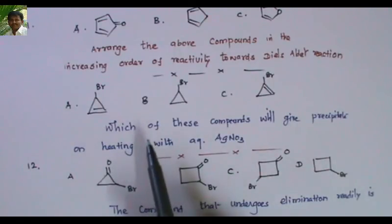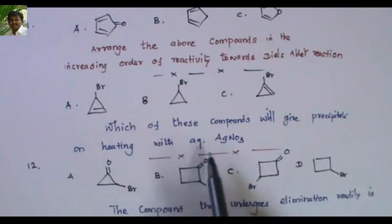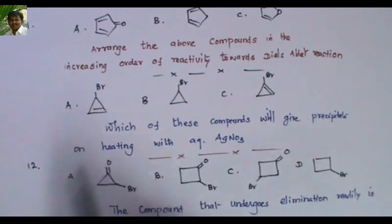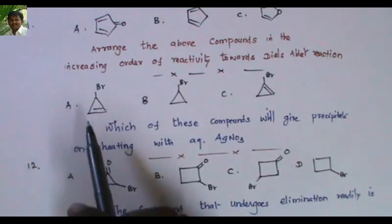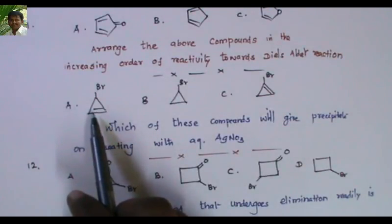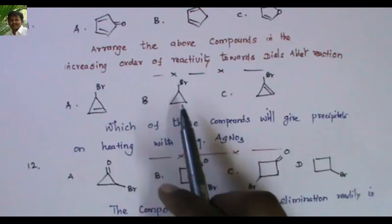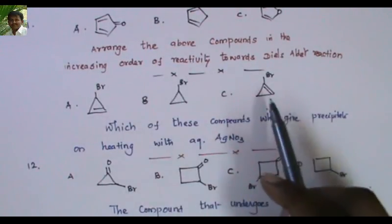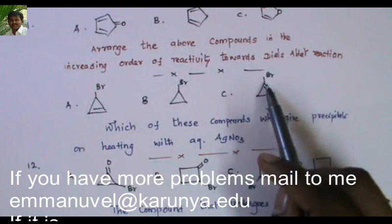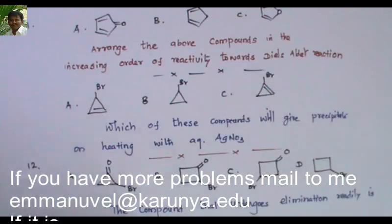Next: which of these compounds will give a precipitate on heating with silver nitrate? Three bromides are given — first is cyclopropenyl bromide, second is cyclopropyl bromide, and the third is also a cyclopropyl bromide with a double bond. Which one will readily give a precipitate on heating with silver nitrate?